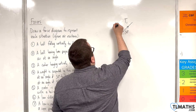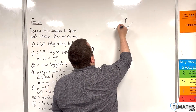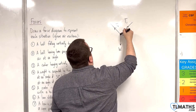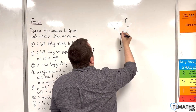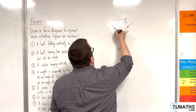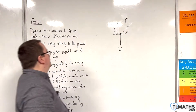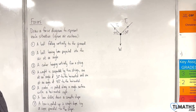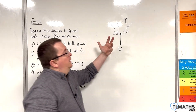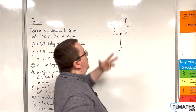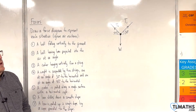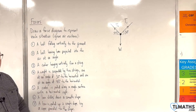The other string is acting at an angle of 45 degrees to the horizontal, and we'll call that T2. The tension in that string will be different to the tension in the first string, and this angle is 45 degrees. It doesn't matter whether you've got them the other way around — that's perfectly fine.